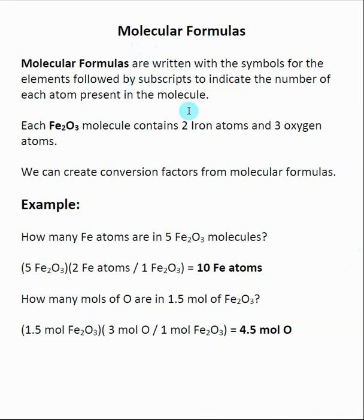Molecular formulas are generally written with the symbols of the elements that are involved in the compound, and then we put subscripts just to the right of the elemental symbol to say how many of each type of atom is present inside of the molecule.